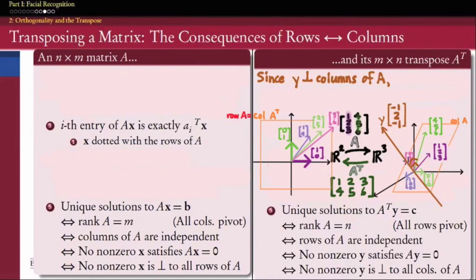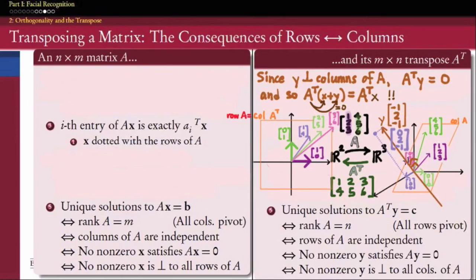If A^T y = 0, then there is no difference between A^T x and A^T (x + y). Therefore, the system A^T y = c will have non-unique solutions — all it takes to find two elements with the same image under A transpose is to add y to a solution. For example, (1, 0, 0) maps to (1, 4) under A transpose, and so does (0, 2, −1) — that is, (1,0,0) + (−1,2,−1). So we do not get unique solutions for A^T y = c.